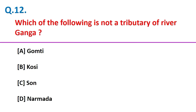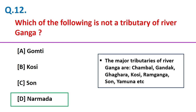Which of the following is not a tributary of River Ganga? Narmada. The major tributaries of River Ganga are Yamuna, Chambal, Gomti, Ghagra, Kosi, Ram Ganga, and Son.